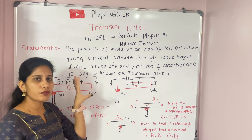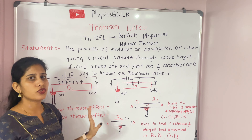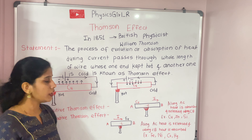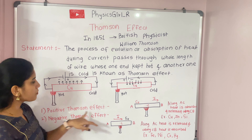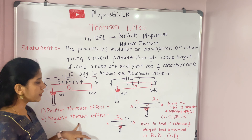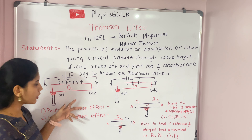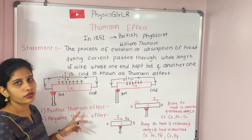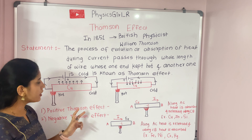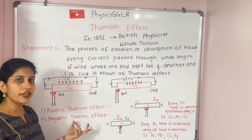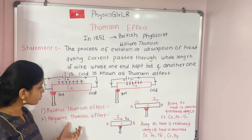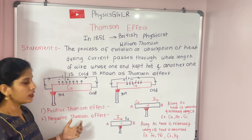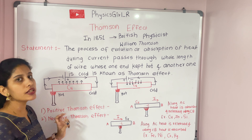This phenomenon happens only when we pass a current through a conducting wire whose two ends are kept at a temperature difference — one end hot and the other cold — and the current-carrying conductor throughout its length will evolve or absorb heat. This is the Thomson effect. Now there are two types: the positive Thomson effect and the negative Thomson effect, depending on whether heat transfers along or opposite to the direction of current flow.